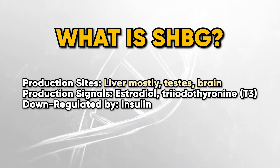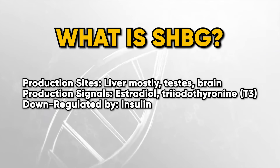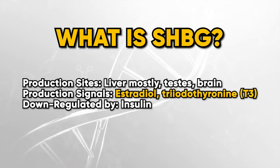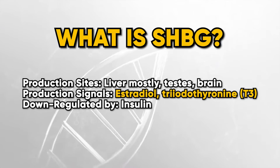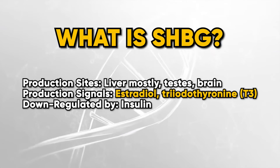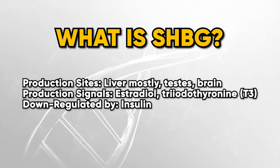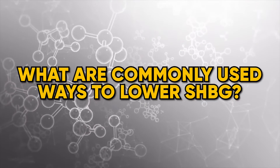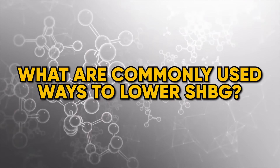Production signals that increase SHBG include estrogen (estradiol) and triiodothyronine — thyroid T3 hormone. In addition, SHBG is actually downregulated by insulin.